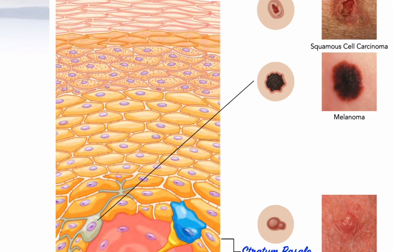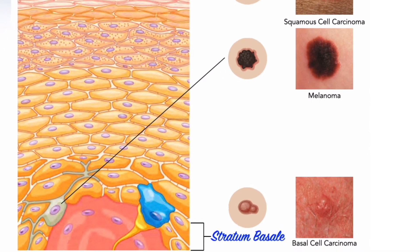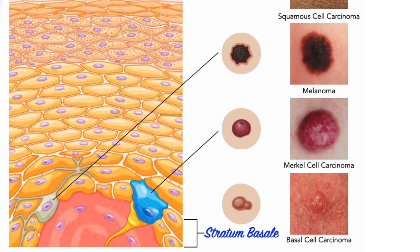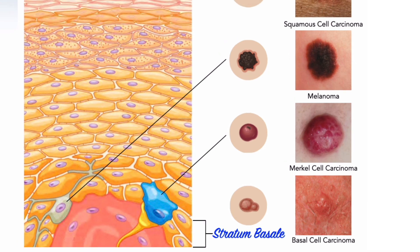Avoiding exposure to UV radiation in sunlight, especially during the middle of the day, and using a sunblock — not a tanning oil — would largely prevent all three forms of these cancers. Other more rare forms of skin cancer include cancers formed in Merkel cells, which are tactile epithelial cells that act as mechanoreceptors essential for light touch sensation.